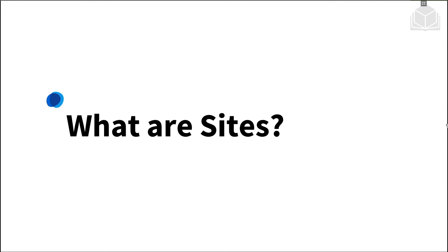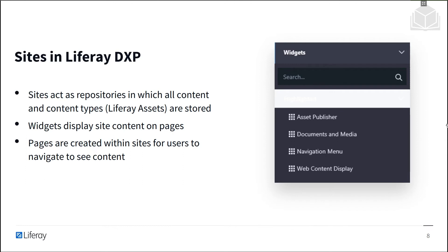So, what are sites? Sites not only contain pages, they also act as repositories for many different types of content. These different types of content are called Liferay assets. Examples of Liferay assets include documents, blog posts, wiki articles, knowledge-based articles, and so forth. Widgets, also known as portlets, are applications that can be added to pages. These applications can display site content, including custom kinds of content, on pages.